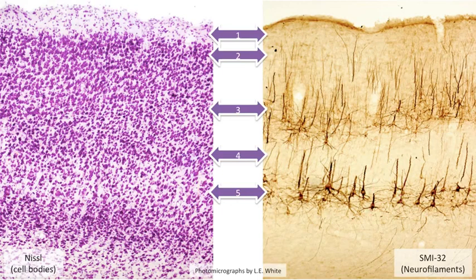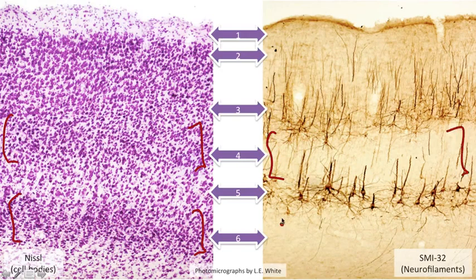Just below layer five, finally, we have layer six. Layer six in some respects resembles layer four — there is a concentration of small cells that are more densely packed. With respect to the SMI-32 stain, layer six is, like layer four, devoid of cellular staining. And below layer six, we have the white matter that underlies the cerebral cortex.